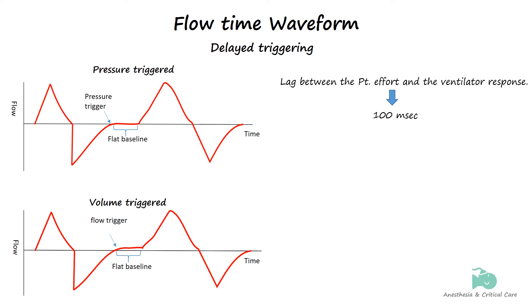The primary causes of delayed triggering include low ventilator sensitivity settings, the presence of intrinsic PEEP or auto-PEEP, weak patient effort, and mechanical issues such as leaks or faulty sensors.